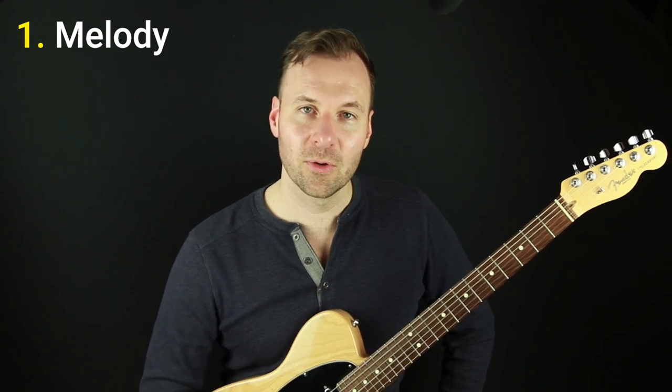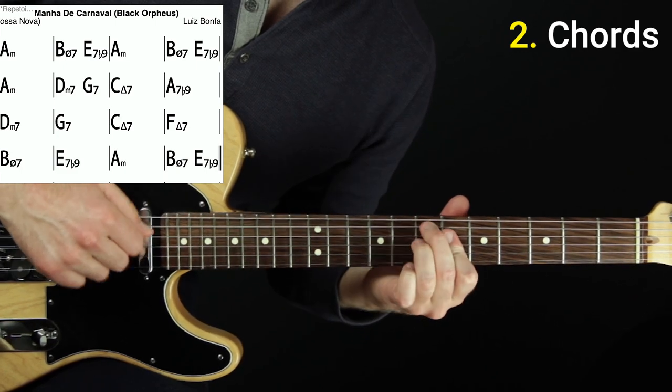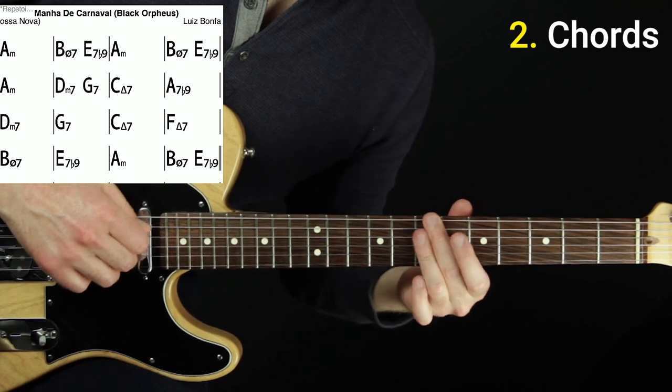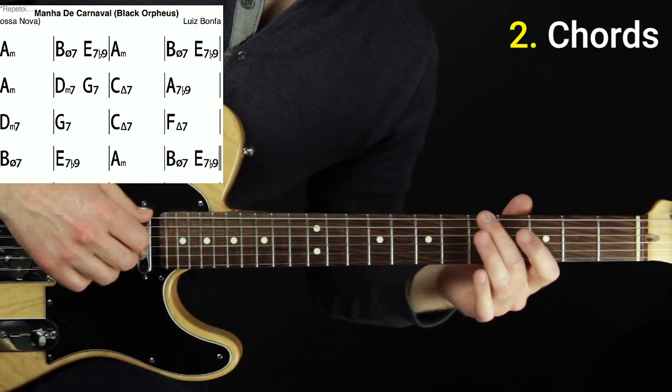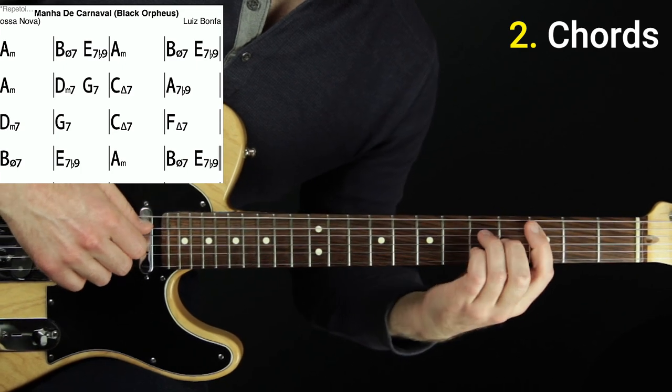But let's do step two, which is I just want to show you the chords. So here are the chords for this tune. We have A minor and then a minor 2-5. Going back to A minor. Minor 2-5. A minor again.